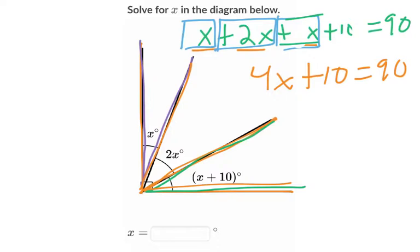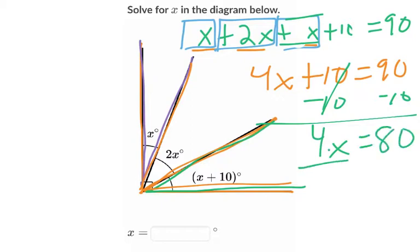Now you use inverse operations here, so subtract 10 on both sides, and so that's 0, we're left with 4x, and that equals 80. And so to undo multiplication, we divide by 4 on both sides, so x is equal to 20.